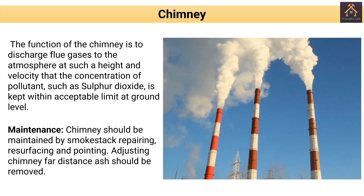Next, the last part of the thermal power plant is the chimney. The function of the chimney is to discharge the flue gases to the atmosphere at such a height and velocity that the concentration of pollutants such as sulfur dioxide is kept within acceptable limits at ground level. The maintenance of the chimney should include smokestack repairing, resurfacing, and pointing, as well as adjusting chimney clearance distances and removing ash.